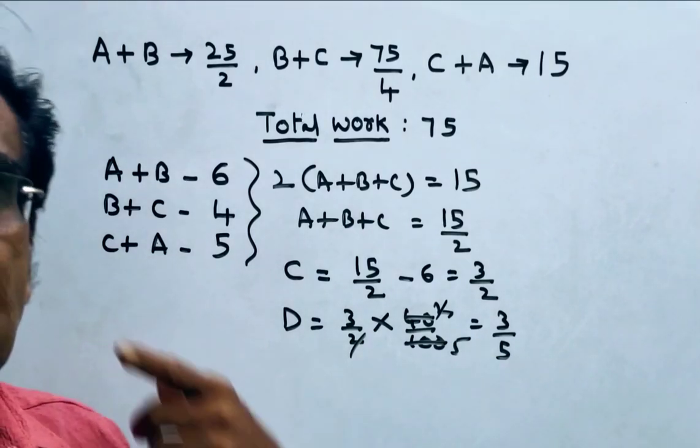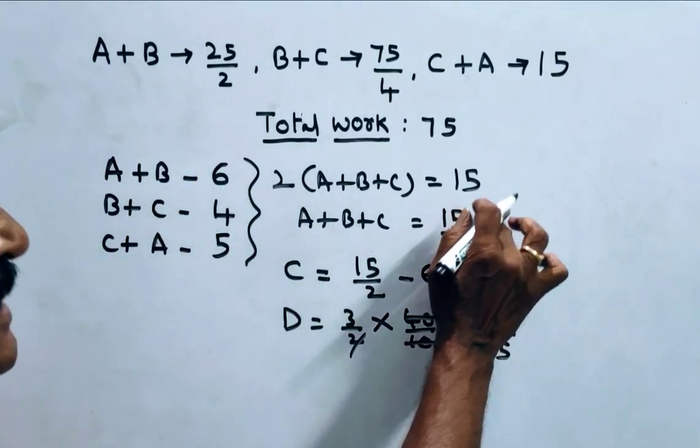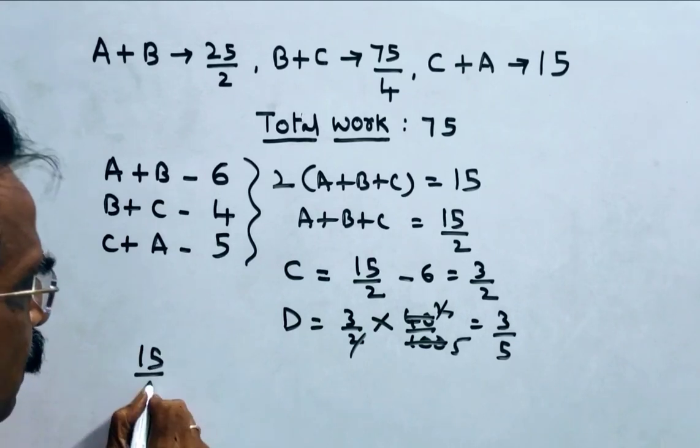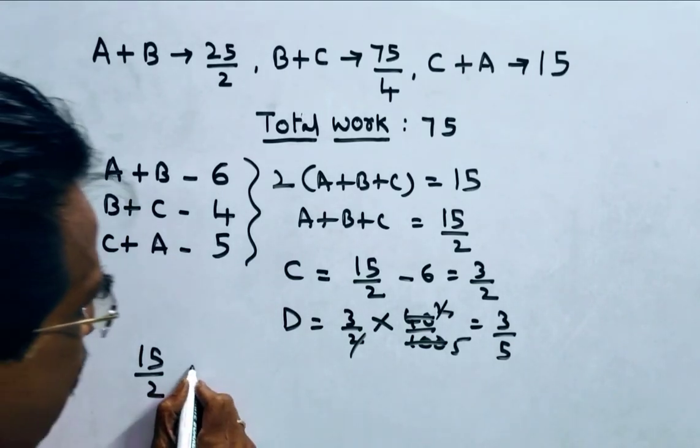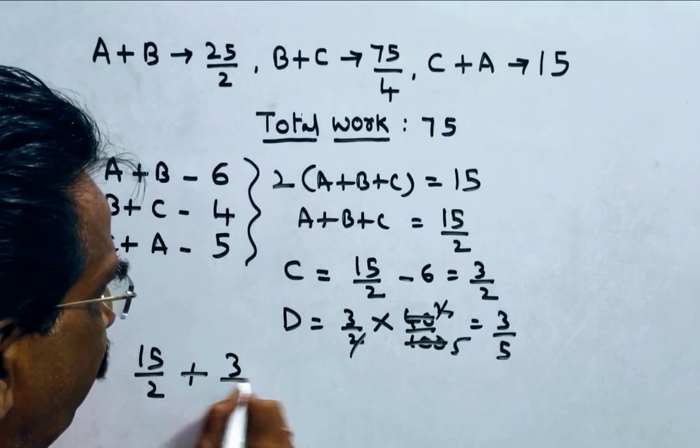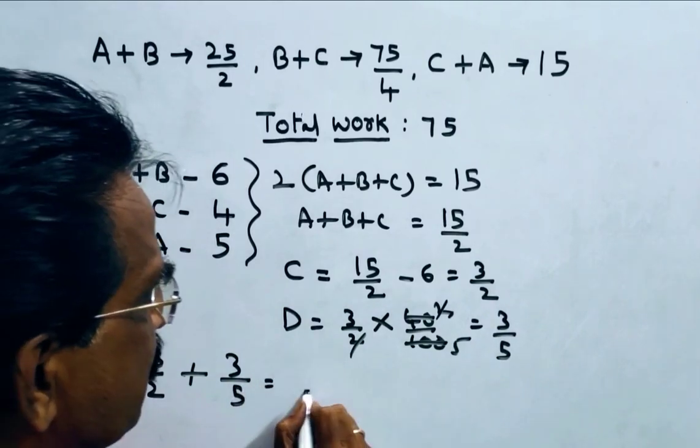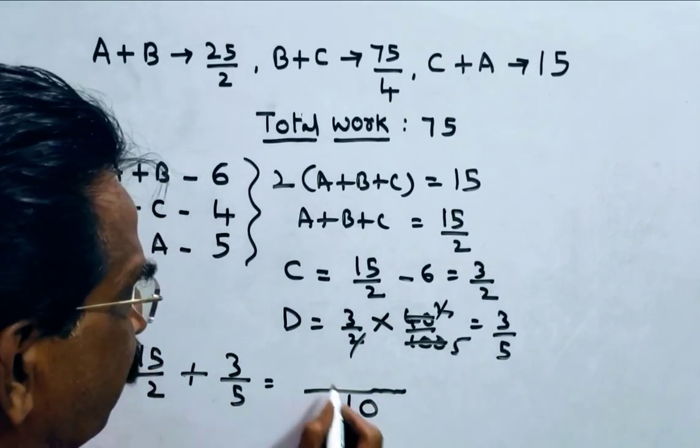Now, A plus B plus C plus D that is 15 by 2, 15 by 2, this is A plus B plus C plus D, 3 by 5, 3 by 5. This is equal to 10 LCM, 15, 5.